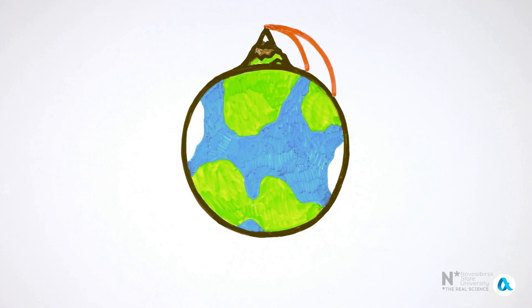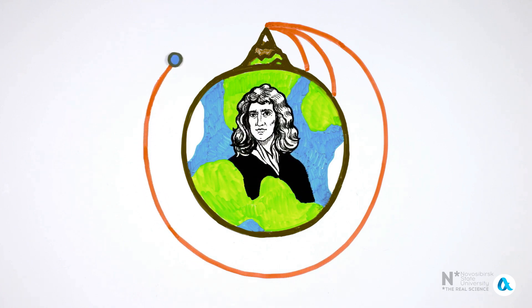By deviating from a straight trajectory, it will move in a circular orbit at the same height above the Earth. Such a projectile moving in a circular orbit is affectionately referred to by Isaac Newton as a little satellite. Therefore Newton can rightfully be considered the grandfather of modern astronautics.